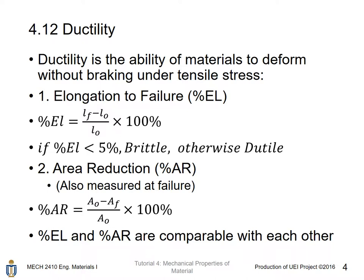Ductility is the ability of a material to deform without breaking under tensile stress, and we have two methods to measure it. The first one is the elongation to failure, percentage EL. Percentage EL means the final length at failure minus the original length, over the original length, times 100%. If the percentage elongation is smaller than 5%, we consider it as a brittle material; otherwise, we consider it as a ductile material.